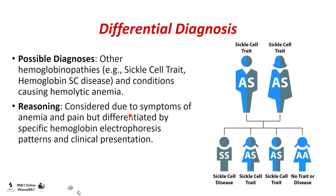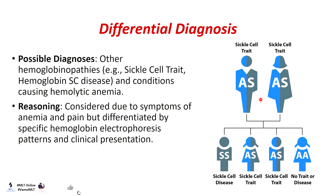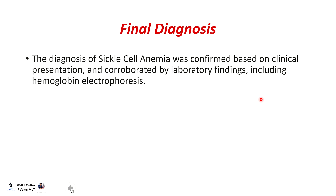Differential diagnosis includes checking for sickle cell trait to determine whether the parents are carriers. A carrier patient may have sickle cell trait and be prone to mild conditions of sickle cell anemia, which must be considered. The final diagnosis of sickle cell anemia was confirmed based on clinical presentation and corroborated by laboratory findings including hemoglobin electrophoresis.